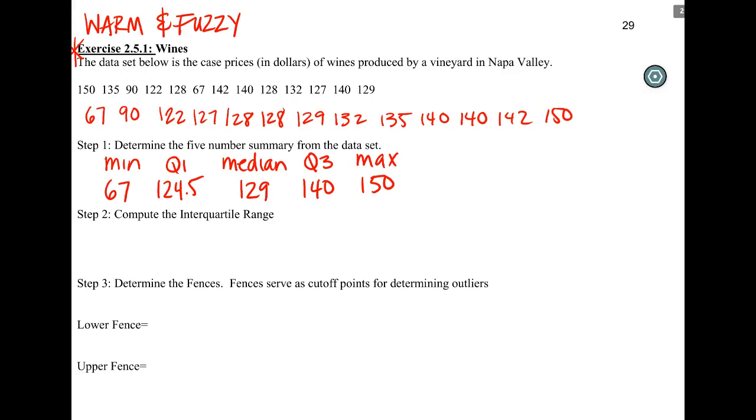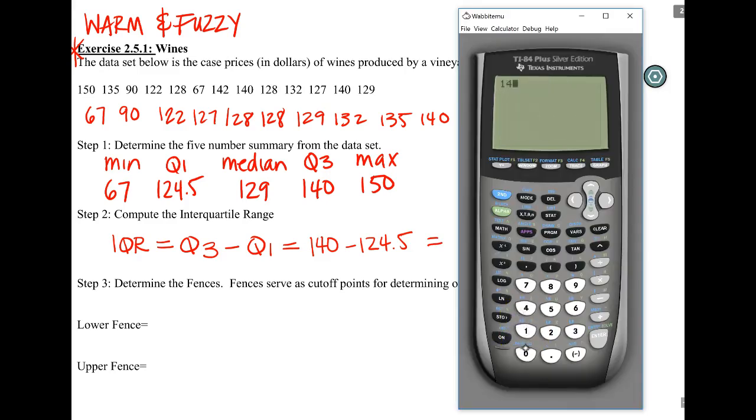Now that we have our five-number summary down, the next step is to find our IQR because that's what we need to add or subtract from our Q1 and Q3 to be able to figure out whether or not we have outliers. This will not be points on the exam. In fact, I usually skip this step, but our IQR is Q3 minus Q1, our maximum of that middle 50% and the minimum of that middle 50%. So this is 140 minus 124.5, which is 15.5, I believe. I'll double check because I don't trust myself. Perfect.